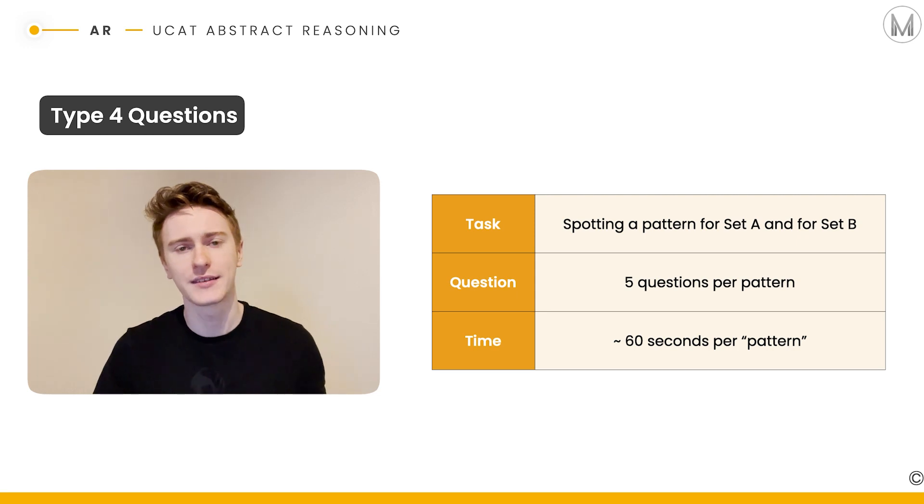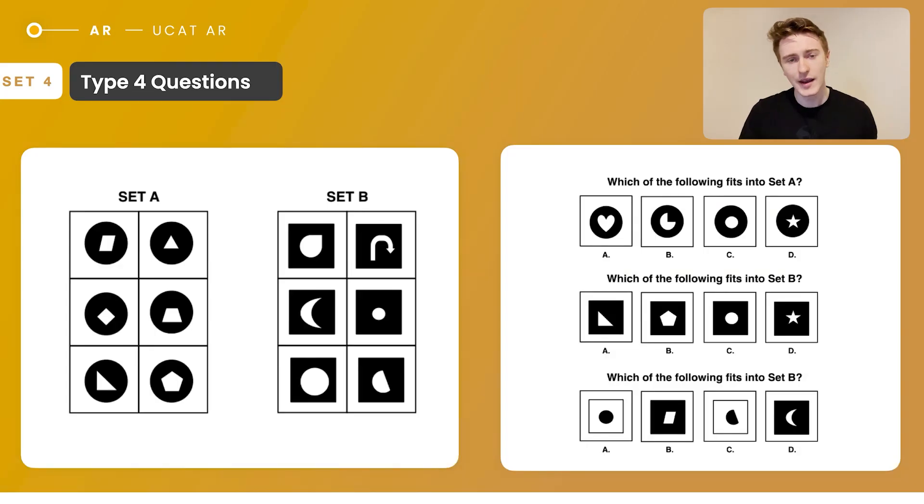Our final type of question is type four questions. These are very similar to type one questions. Basically, you're given two sets, set A and set B. But in this case, you're given a series of test shapes and you're asked which one in this series belongs to set A or set B. It's easier with an example. Again, you've got five questions per pattern, much like the type one questions, which gives you roughly 60 seconds to analyze that pattern. So let's do an example together. Pause the video now and have a go.